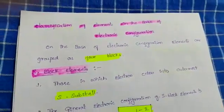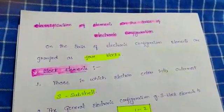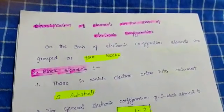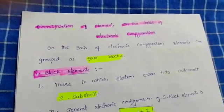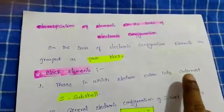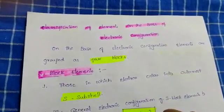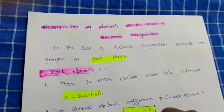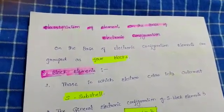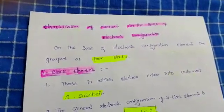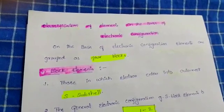Classification of elements on the basis of electronic configuration. On the basis of electronic configuration, elements are grouped as four blocks: S-block elements, P-block elements, D-block elements, and F-block elements.